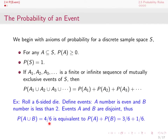Now let's think of it in terms of individual probabilities. The probability of A is 3 out of 6, and the probability of B is 1 out of 6. Adding those gives 4 out of 6, the same as the probability of A union B. This is an example of axiom number 3.